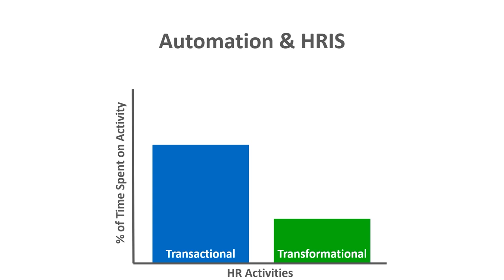Transactional activities can also include compliance-oriented activities and things the organization must do in terms of reporting to government, whether local, state, or federal. Transformational activities, on the other hand, are those that really add value to the organization — activities that contribute to strategic objectives and help sustain a competitive advantage by leveraging the people in the organization. Historically, organizations spent a larger percent of time on transactional activities because, 50, 60, or 70 years ago, sophisticated computers didn't exist to automate processes like payroll, so people had to do those processes by hand.